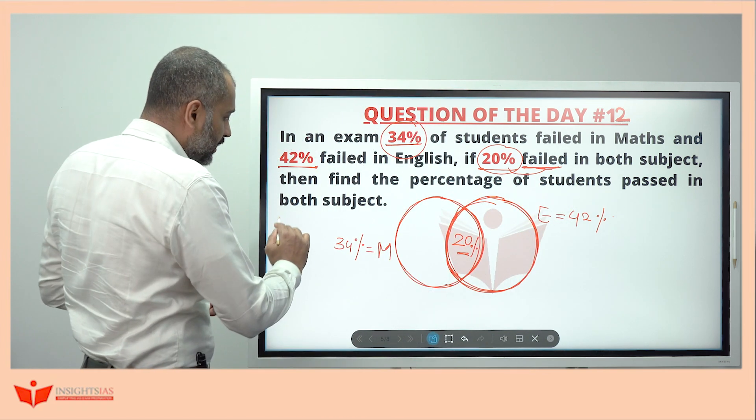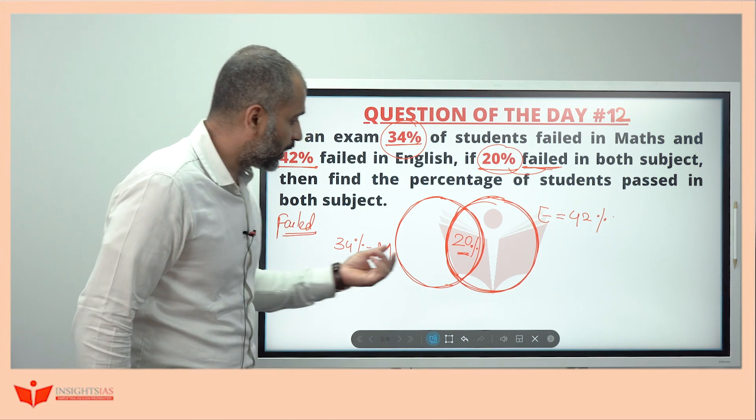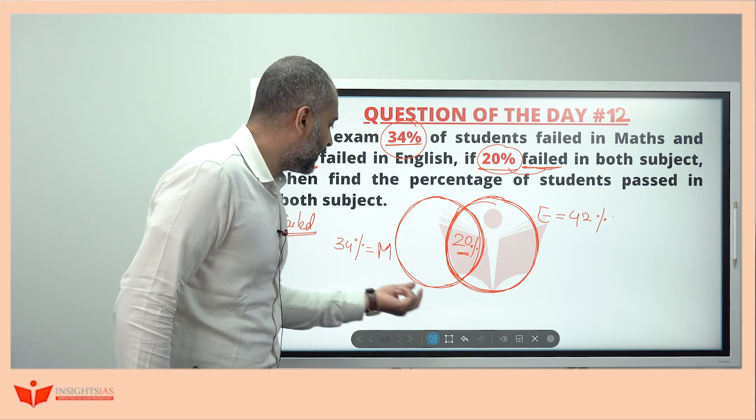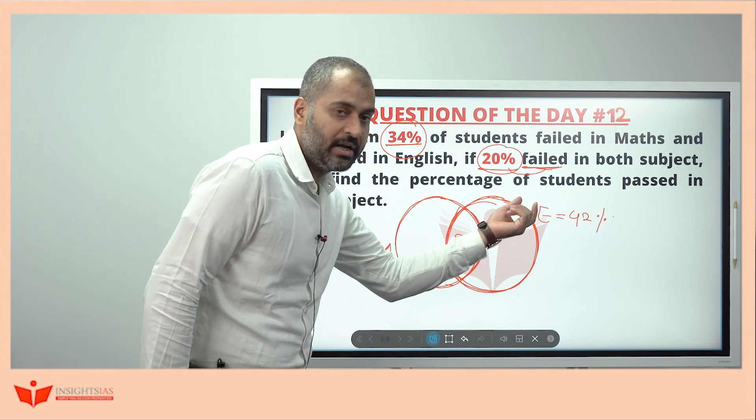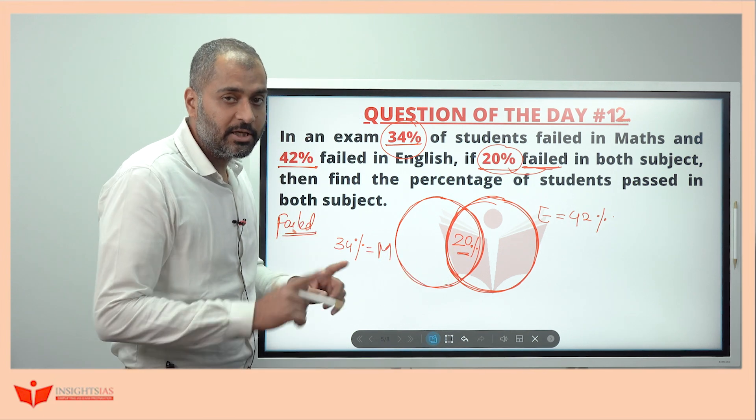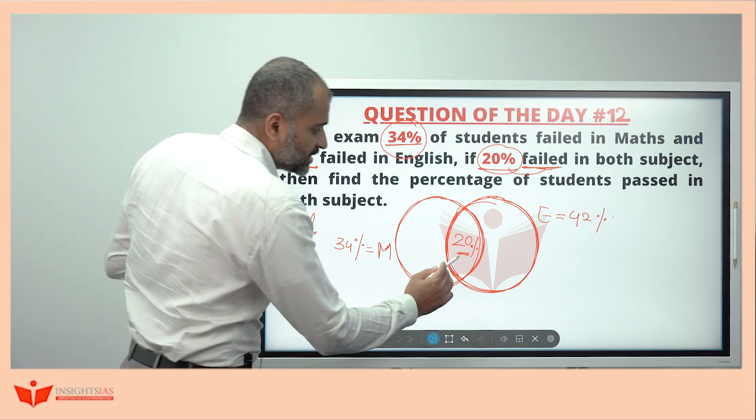Once you fill data like this 20%, which is failed data, all the data, whatever you fill has to be of failed data. So whatever you are filling inside here, everything should be of failed data only - failed candidates of Maths, failed candidates of English, failed of both. You cannot add failed with the passed. The units are different there.